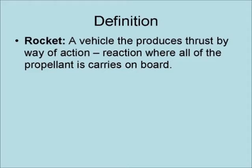A rocket is a vehicle that produces thrust by way of action-reaction where all of the propellant is carried on board. This is the rocket formula. It means that the change in velocity of a rocket is equal to the velocity at which the propellant is expelled times the natural log of the ratio of the initial mass and the mass after the propellant is expelled.